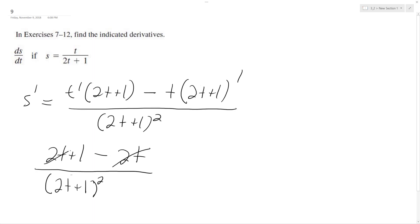Quantity squared, and the 2t's cancel off, so we're simply left with s prime is going to be equal to 1 over 2t plus 1 squared, and that's it.